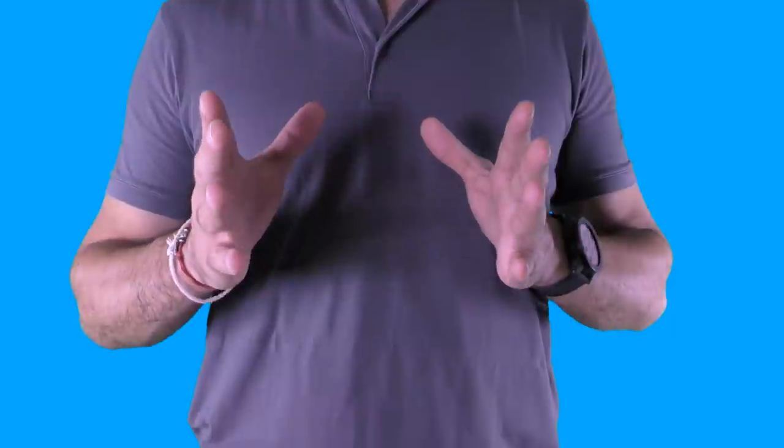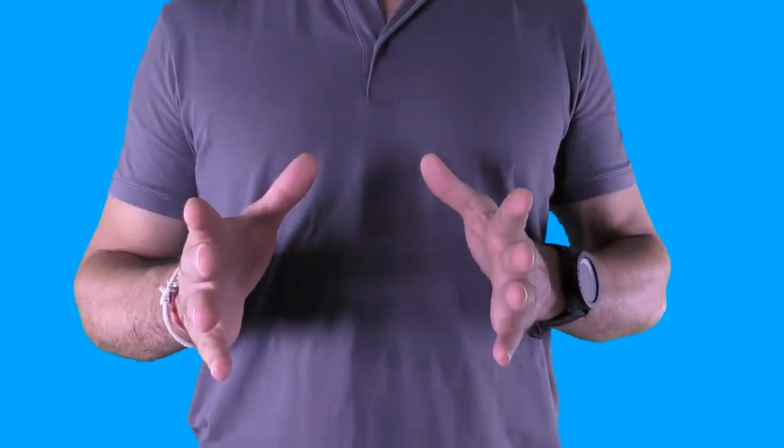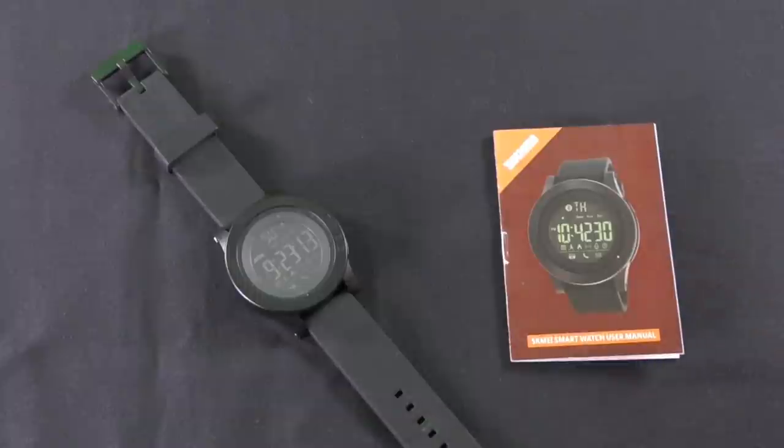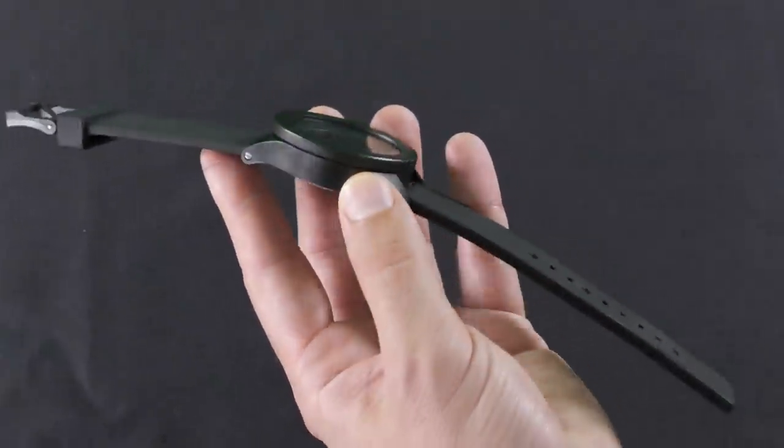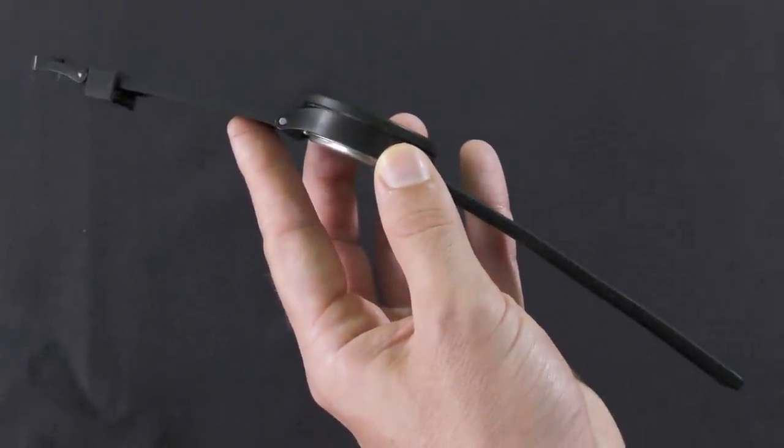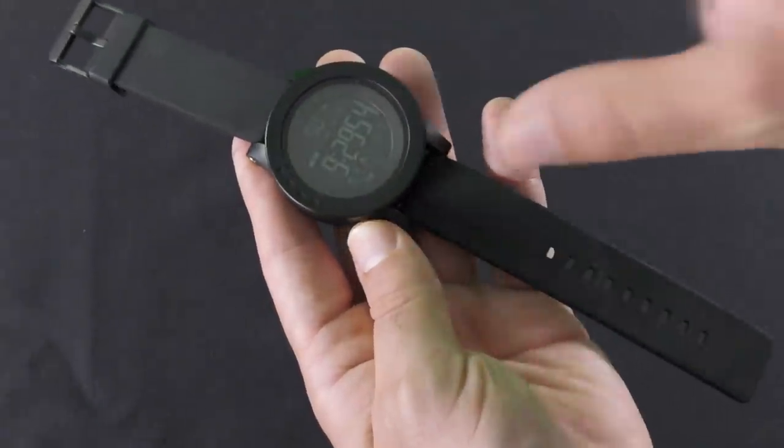I received the watch only with the user manual in English that includes 18 pages, which is a lot in my opinion. The watch itself is black, the case is made from plastic, the dial window seems to be made from resin glass, and the band is made from rubber or silicon.